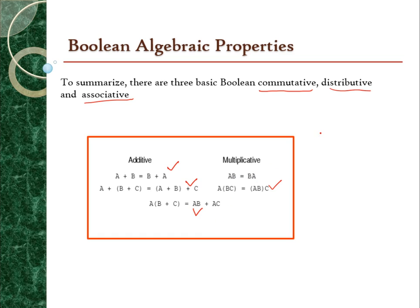We are going to use all these Boolean algebraic properties and Boolean algebraic identities to simplify Boolean expressions before drawing the ladder logic diagram. I'll see you again in the next video where we are going to continue with the De Morgan theorem and mnemonic code.